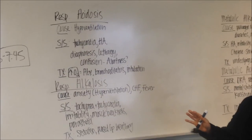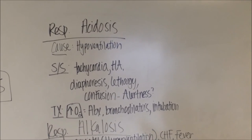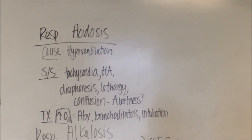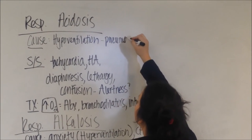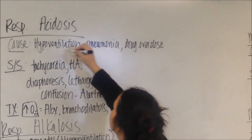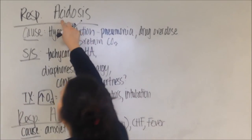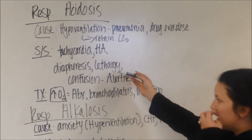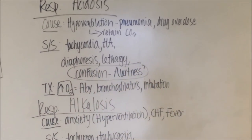Now that we learned how to read the numbers of the ABGs, now we need to know the four disorders that could be the cause of the abnormality in the numbers. The first one, respiratory acidosis, the cause is something that causes hypoventilation. So it could be something like pneumonia, drug overdose, something that's going to cause you to retain CO2. CO2 is an acid. You have too much acid. What does our patient going to look like? They're going to be tachycardic, have a headache, sweating, lethargy. You need to check their mental status.